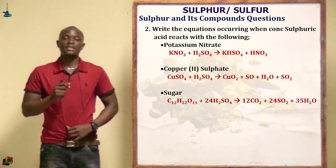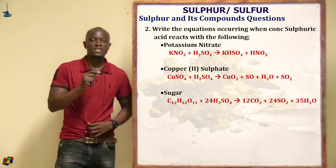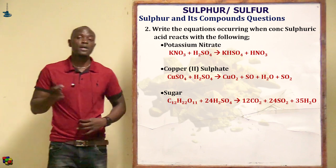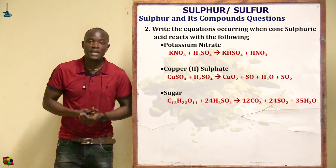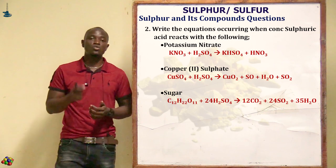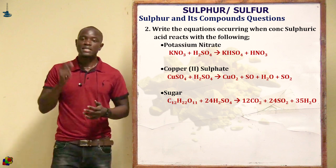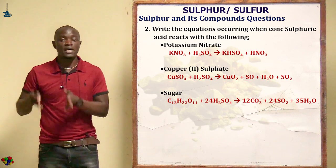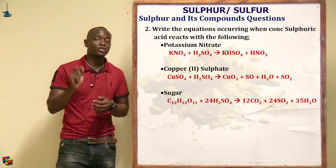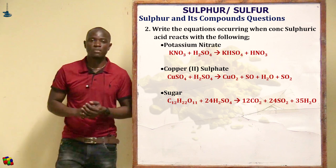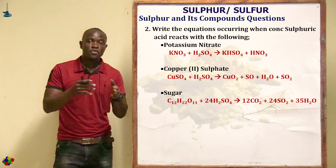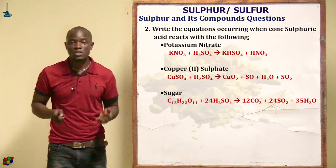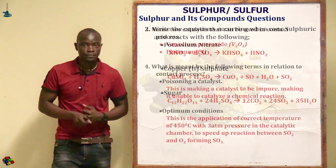When sugar reacts with concentrated sulfuric acid, you obtain carbon dioxide, sulfur dioxide, and water molecules. That is the reaction formed.